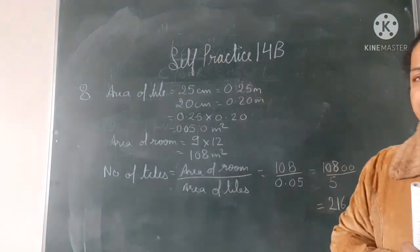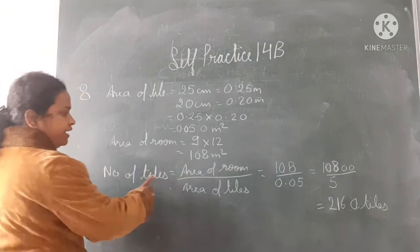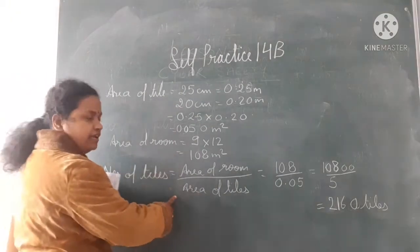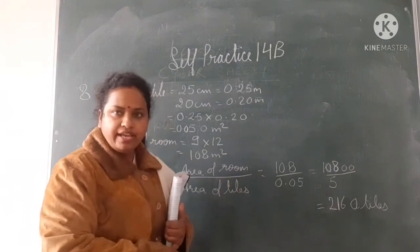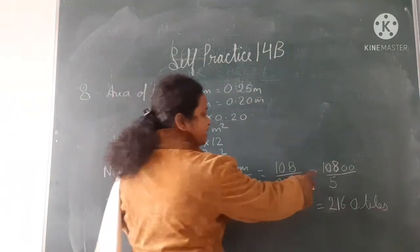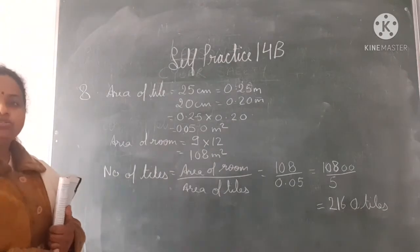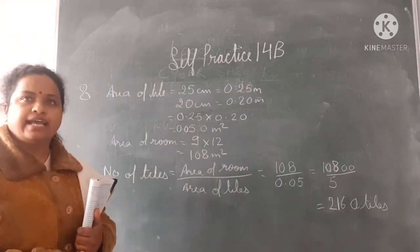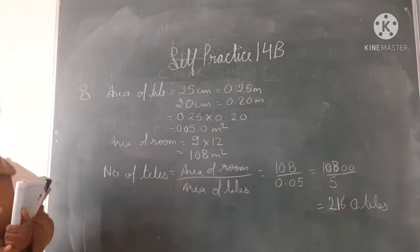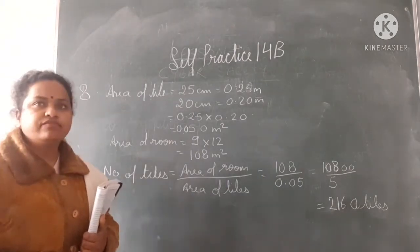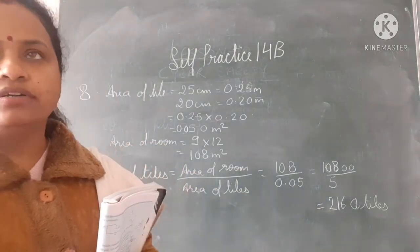Number of tiles equals area of room upon area of tiles, that is 108 upon 0.05. You will get 10,800 upon 5, that will be equal to 2,160 tiles. So 2,160 tiles will be needed for the room.